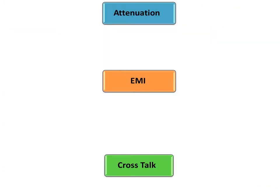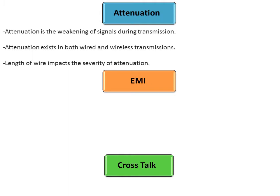It is equally important to understand three key terms. Attenuation is the weakening of signals. It can occur in both wired as well as wireless transmissions. The higher the length of the wire, the greater the chances of attenuation.